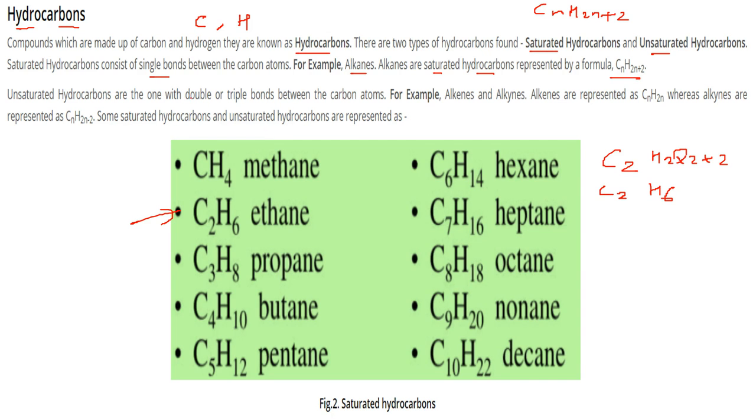Unsaturated hydrocarbons are those which have double or triple bonds between carbon atoms. For example, alkenes and alkynes. Alkenes have the formula CnH2n, and alkynes have the general formula CnH2n-2. These are examples of saturated and unsaturated hydrocarbons.